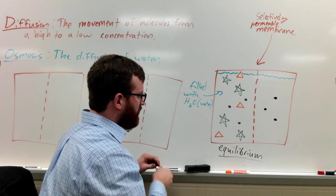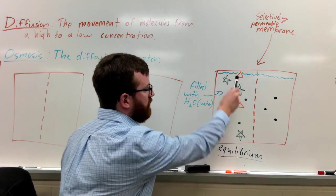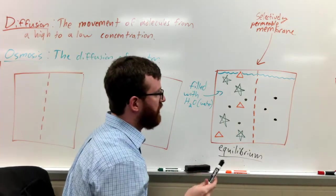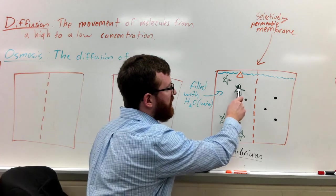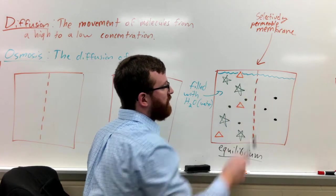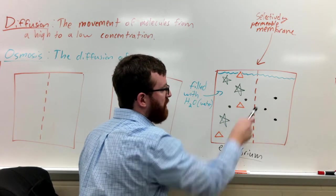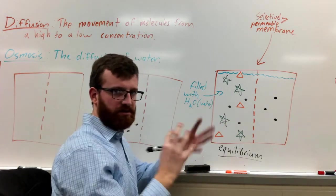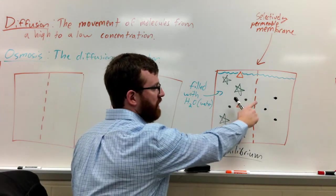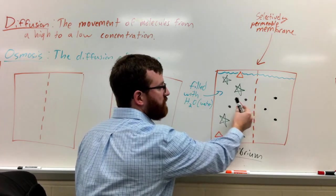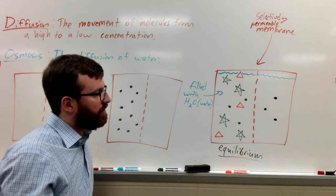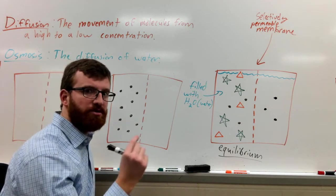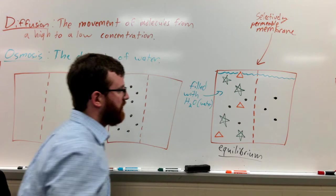One thing to notice is that the triangles and the stars are too big — those represent molecules that are too big and cannot go through these little pores in the membrane. So even though they want to spread out, and molecules are always moving and might collide with the membrane, they're not actually going to be able to go through those little pores. Those little pores are what make the membrane permeable to the small molecules, such as the black dots.